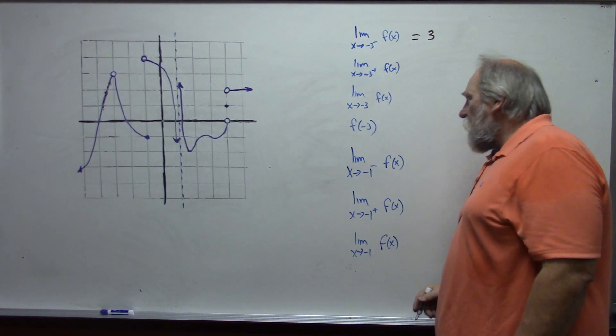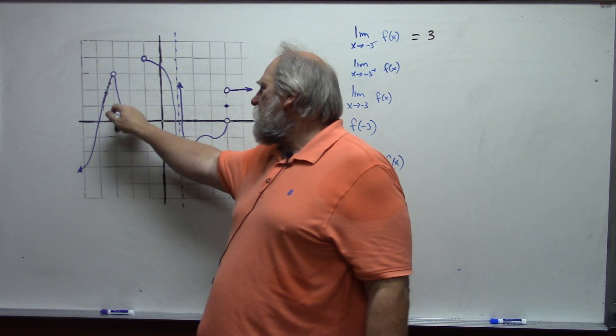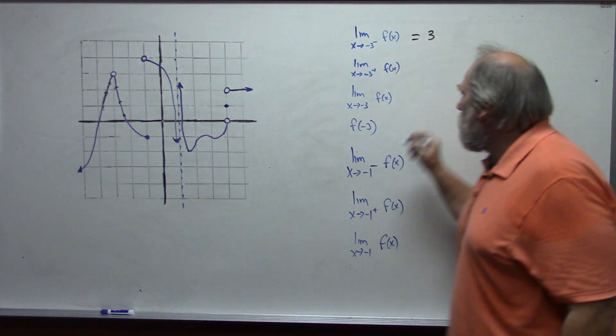The limit as x approaches negative 3 from the right. Now I'm approaching with values bigger than negative 3, but still my y value is approaching the same number. It's still approaching 3.